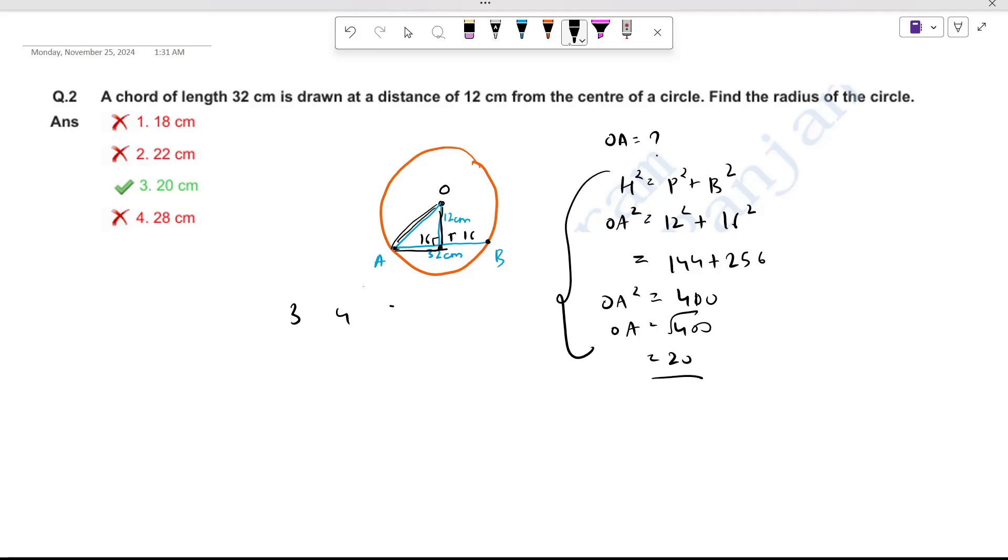Alternatively, you can recognize this as a Pythagorean triplet. 3-4-5 multiplied by 4 gives 12-16-20. So with sides 12 and 16 given, the third side is 20. That's the answer.